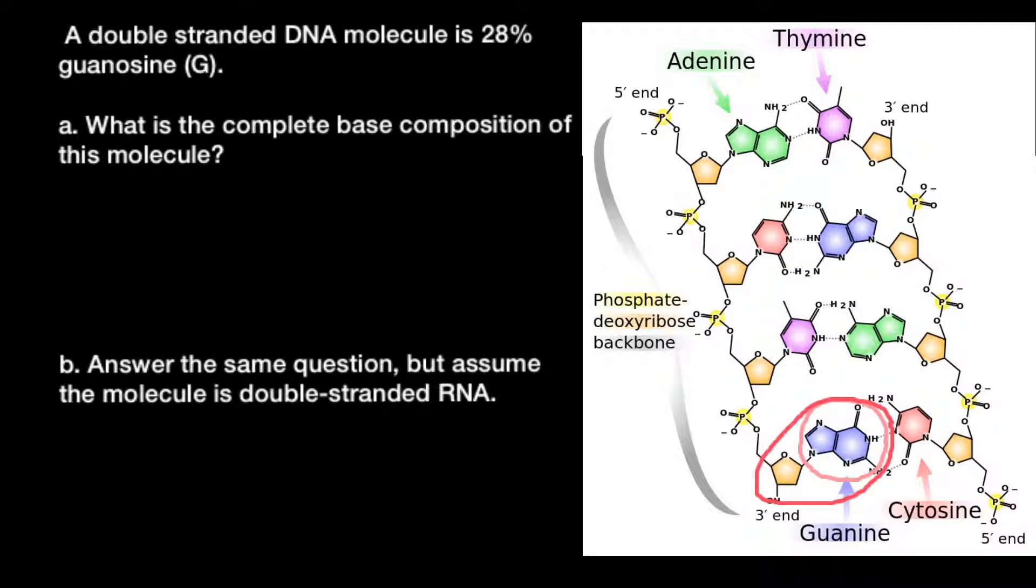As you see, guanine always base pairs with cytosine and adenine always base pairs with thymine. Let me list this information here.